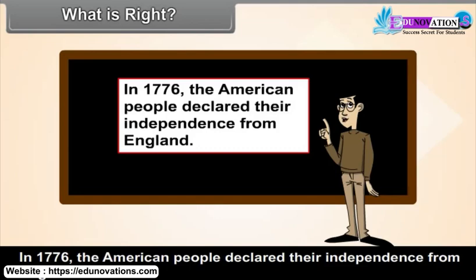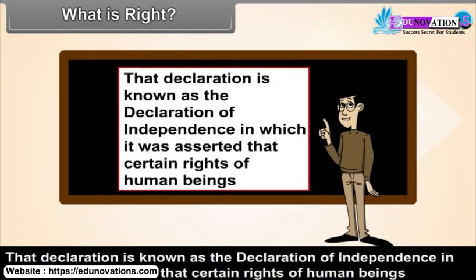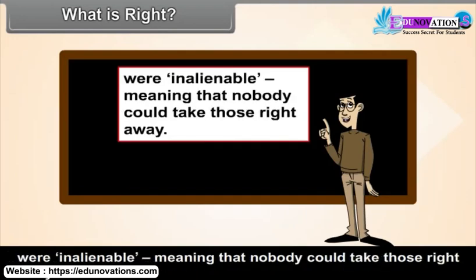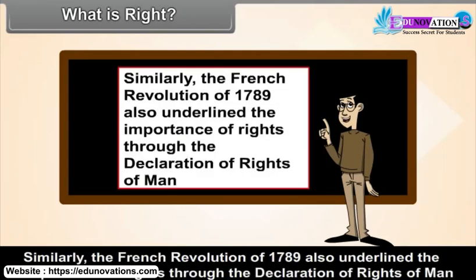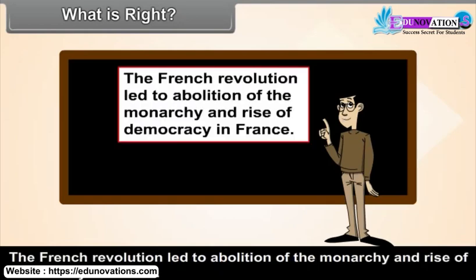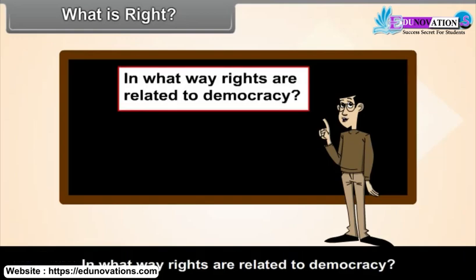In 1776, the American people declared their independence from England. That declaration is known as the Declaration of Independence, in which it was asserted that certain rights of human beings were inalienable — meaning that nobody could take those rights away. Similarly, the French Revolution of 1789 also underlined the importance of rights through the Declaration of Rights of Man and of the Citizens. The French Revolution led to abolition of the monarchy and the rise of democracy in France.